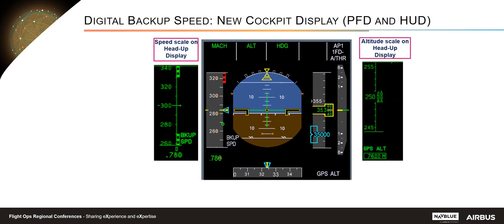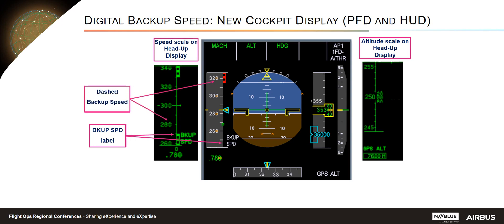Here is the HUD display and PFD with the digital backup speed. As you can see, a new label 'backup speed' appears at the bottom of the speed scale when the digital backup speed is displayed. The last digit of the speed is dashed — you may wonder why. In fact, the digital backup speed has a flight domain validity between VLS and 280 knots / .82 Mach on A330, or 280 knots / .78 Mach on A320. The max speed is limited to ensure 10 to 50 knots accuracy compared to ADR speed. A backup mark is also shown to indicate that the information is less accurate.